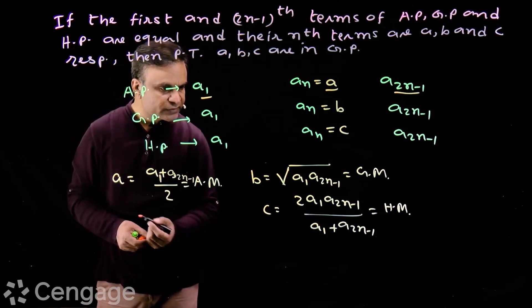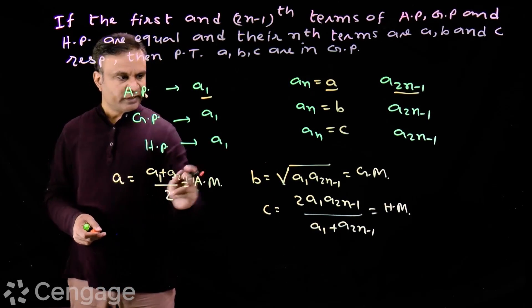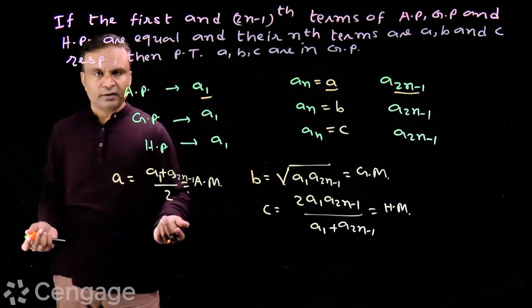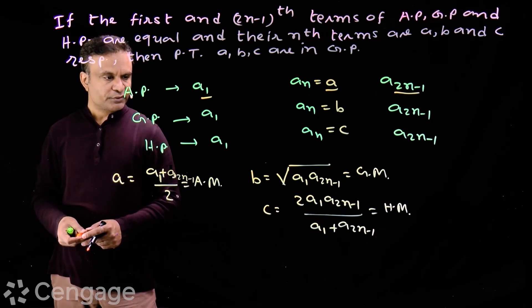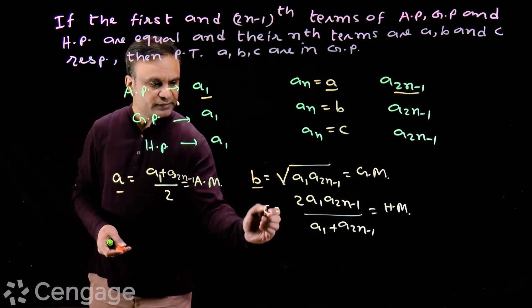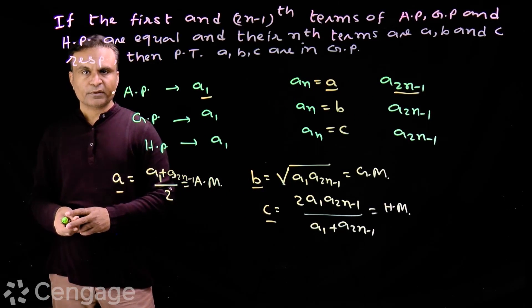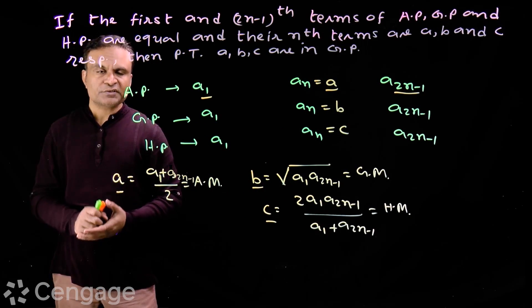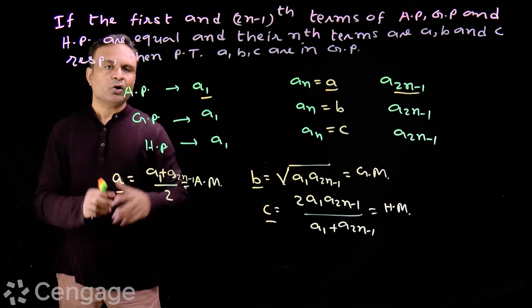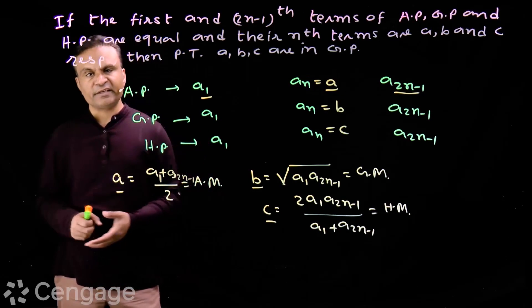From the properties of means, we have that AM, GM, and HM are in geometric progression. So we have that a, b, and c are in geometric progression. This is a conceptual question involving all the progressions and their means.